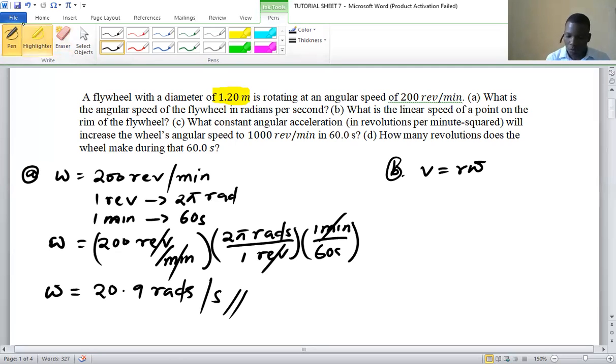We know that diameter equals 2 times radius. So radius is going to be diameter over 2, and then we multiply by omega.